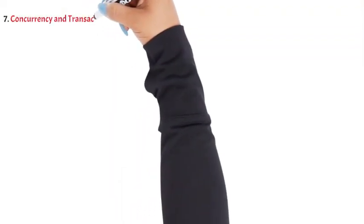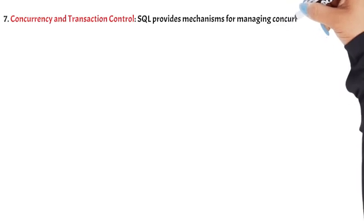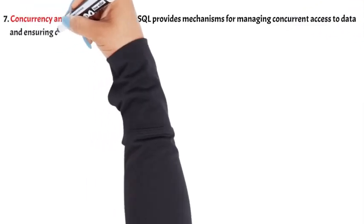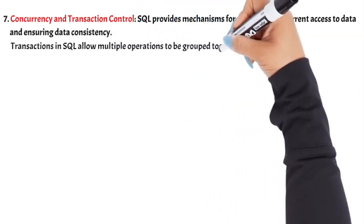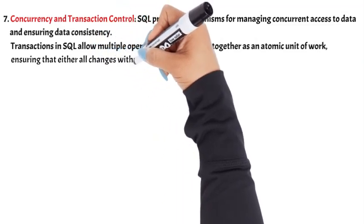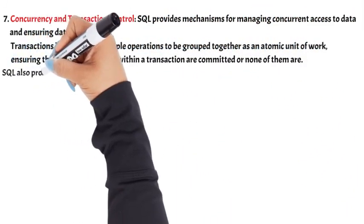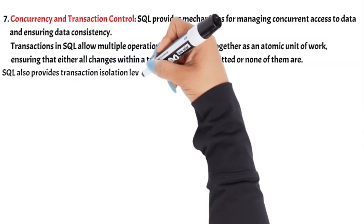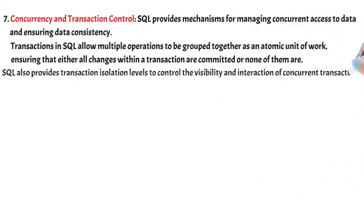Concurrency and transaction control. SQL provides mechanisms for managing concurrent access to data and ensuring data consistency. Transactions in SQL allow multiple operations to be grouped together as an atomic unit of work, ensuring that either all changes within a transaction are committed or none of them are. SQL also provides transaction isolation levels to control the visibility and interaction of concurrent transactions.